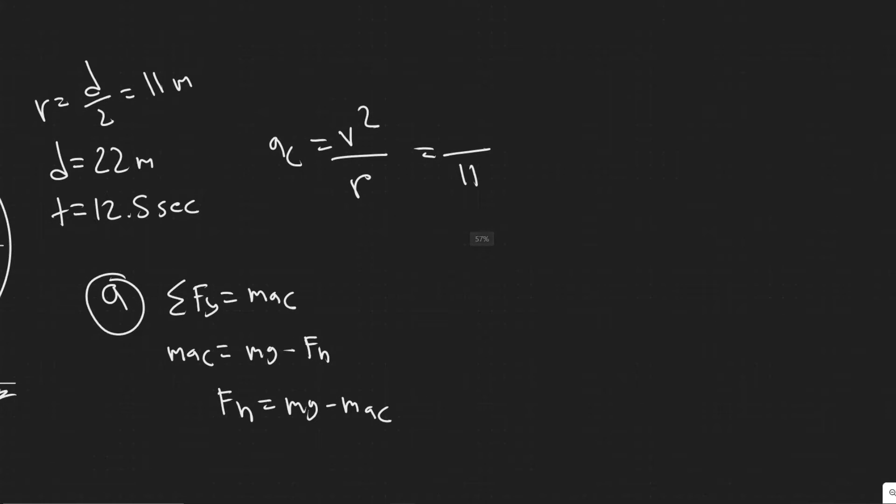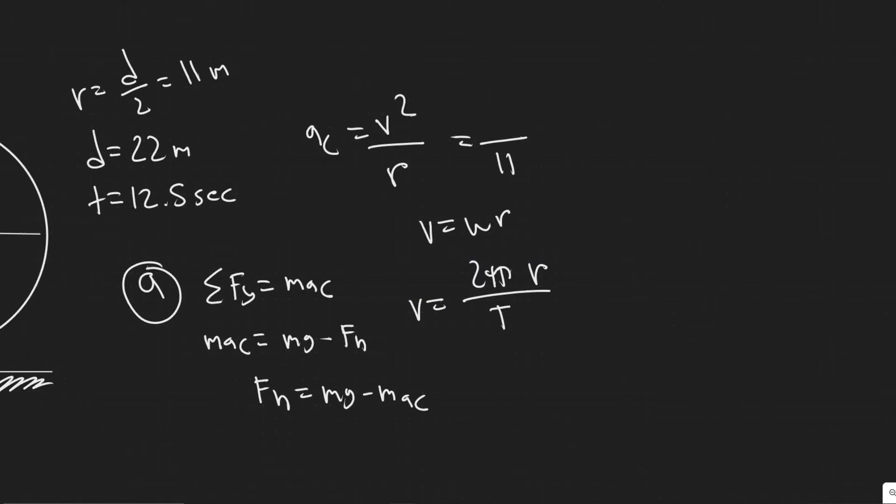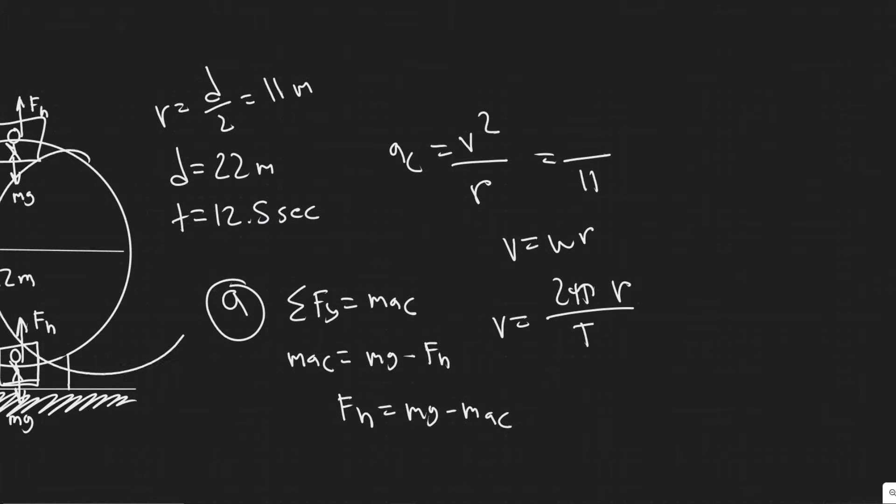For the velocity, you should know V equals omega R, where omega is equal to 2 pi divided by the period. So the velocity in this case is 2 pi times the radius divided by T the period, which is the amount of time it takes to do one completion, which is just 12.5 seconds. They tell us that.